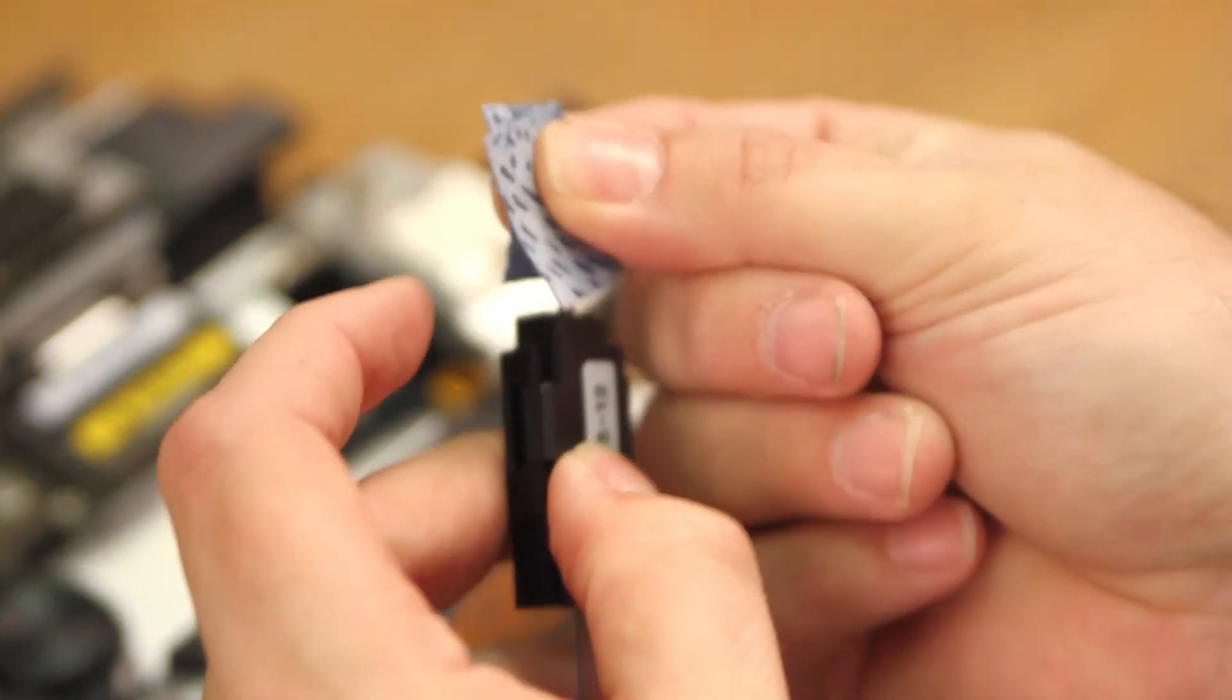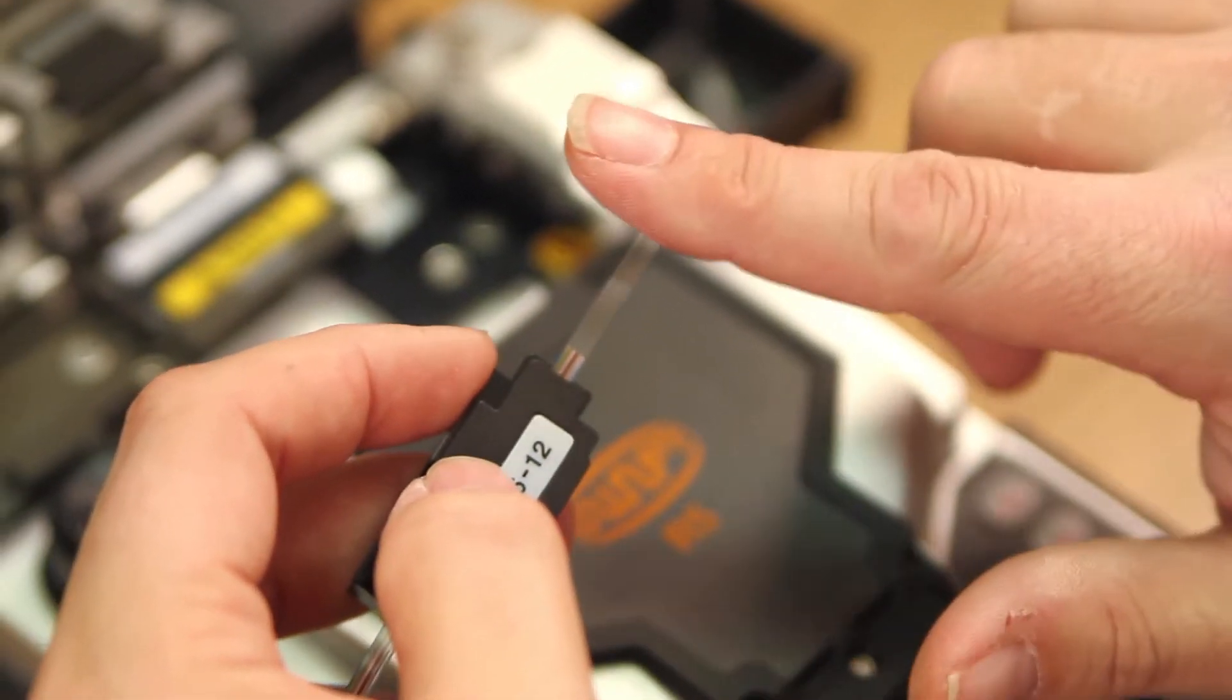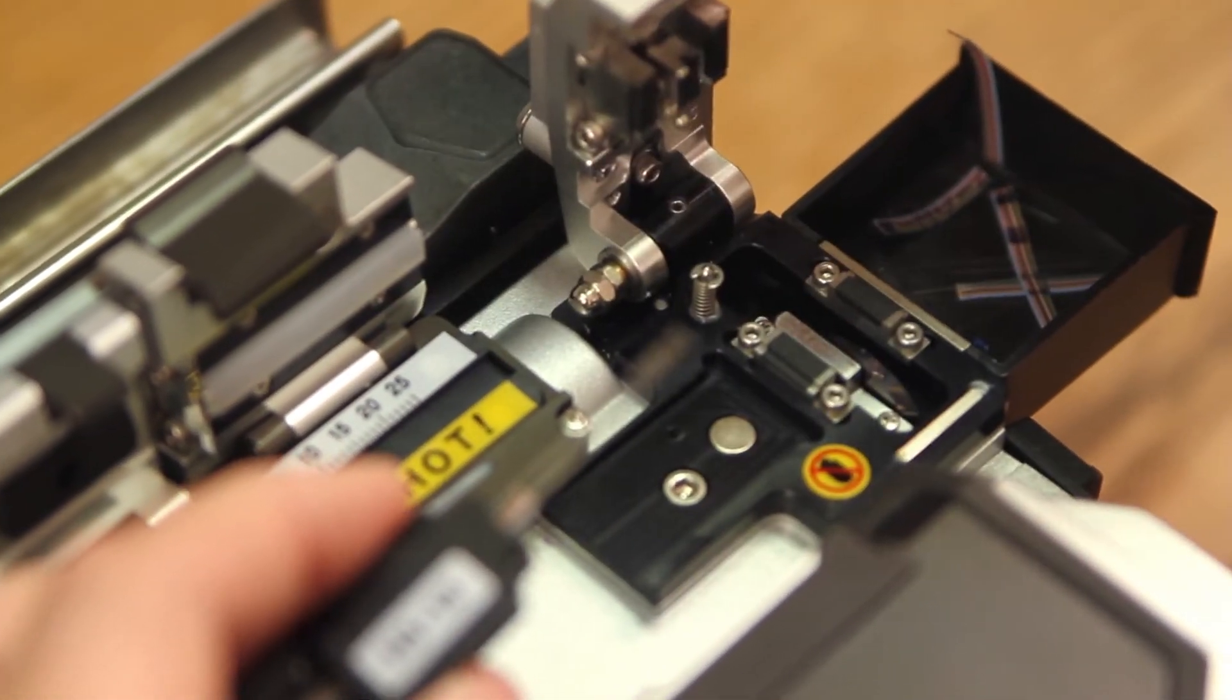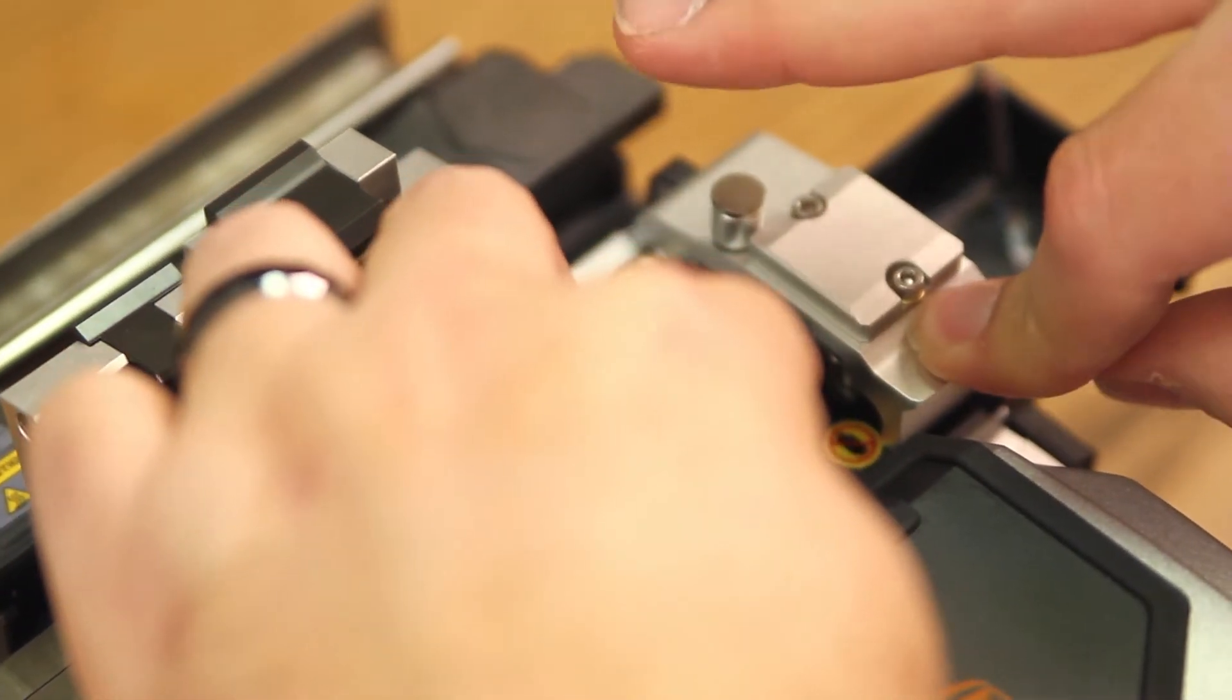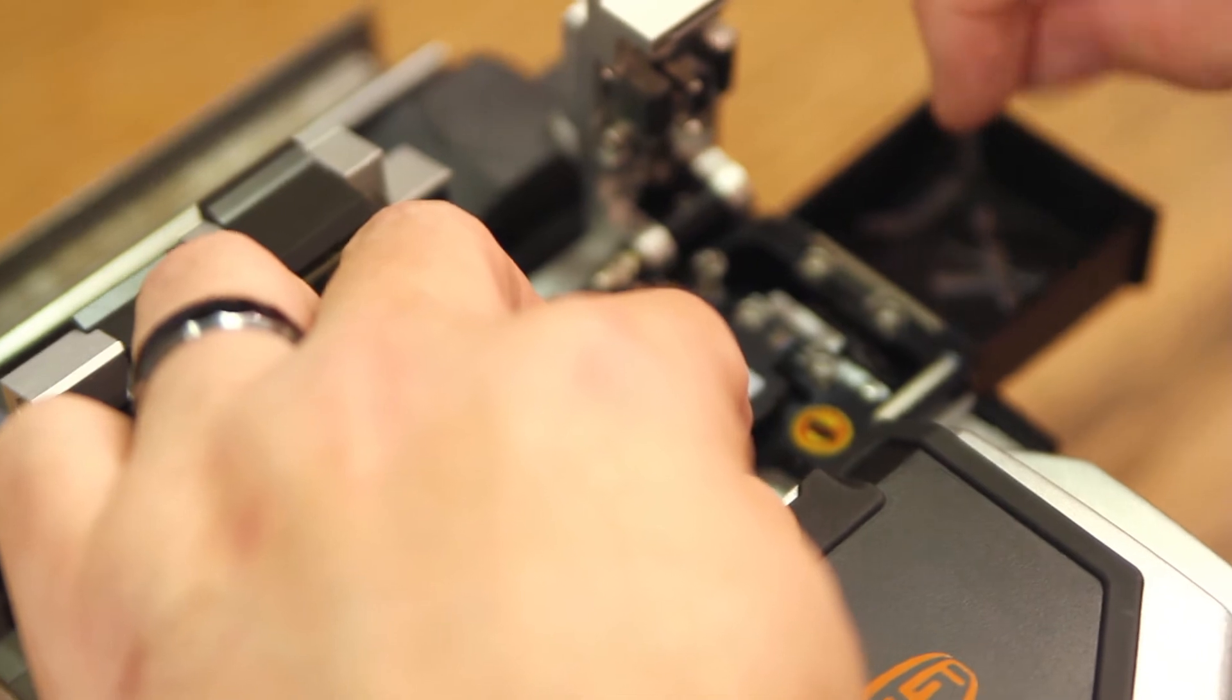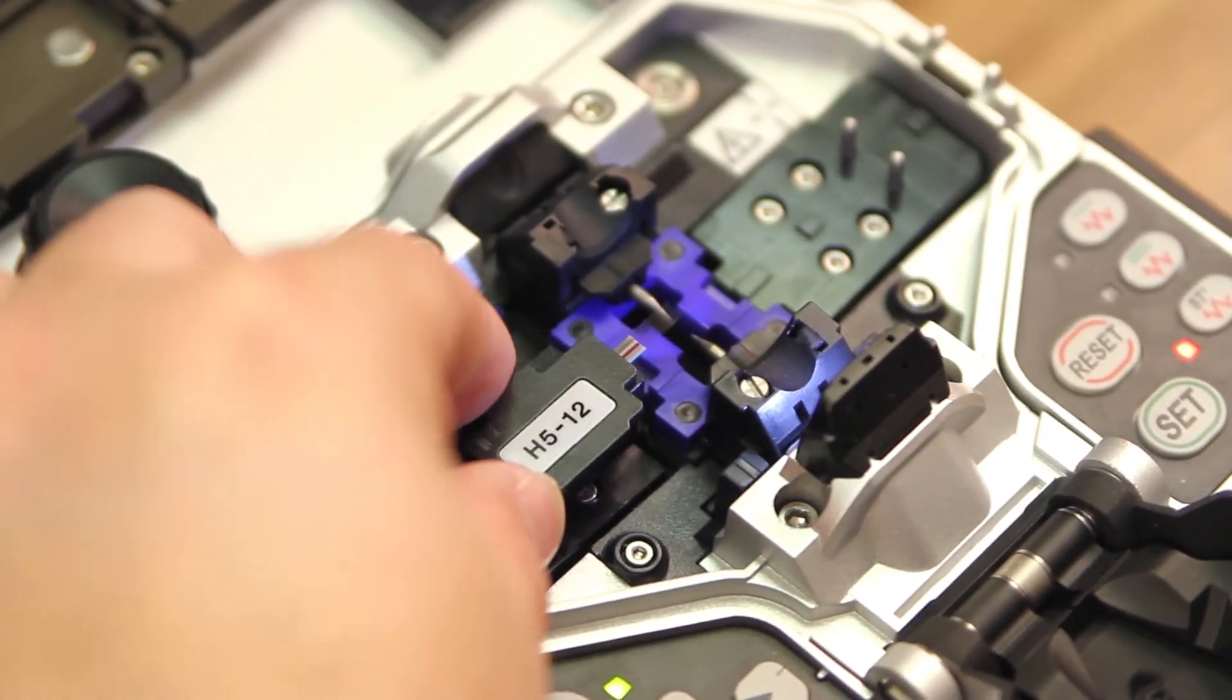Next, clean. Gently fan your fibers. Open your cleaver. Place holder inside. Proper channel. Close. Close. Depress your button. Open your wind cover. Insert into your splicer.